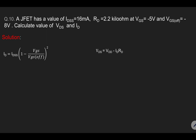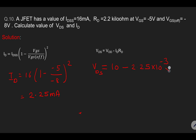For the next JFET problem, we are given IDSS and substitute: ID equals 16 milliampere times 1 minus VGS (given minus 5 volt) divided by minus 8 volt, squared, giving 2.25 milliampere. To calculate VDS (drain to source voltage): VDS equals VDD (10 volt) minus ID (2.25 into 10 to the minus 3 ampere) times drain resistance (2.2 kilo ohm, i.e., 2.2 into 10 to the 3 ohm), which comes out to be 5.05 volt.